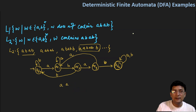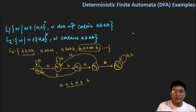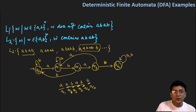Let's say we are taking the string 'aababbb'. This string contains 'abab', so it should be accepted. To trace it: with 'a' you move to q1, with the next 'a' you remain at q1, then with 'b' you move to q2, with 'a' you move to q3, with 'b' you move to q4, and with the final 'b' you remain at q4, which is the final state. So this string is accepted.